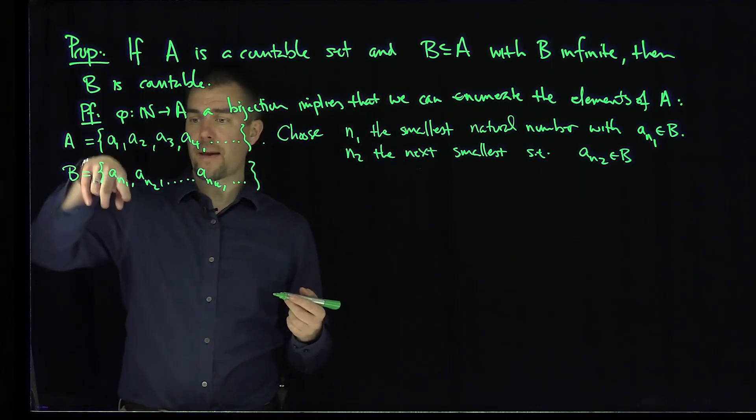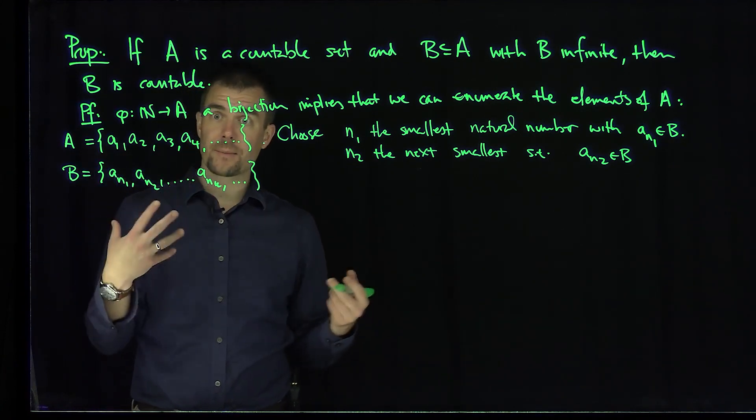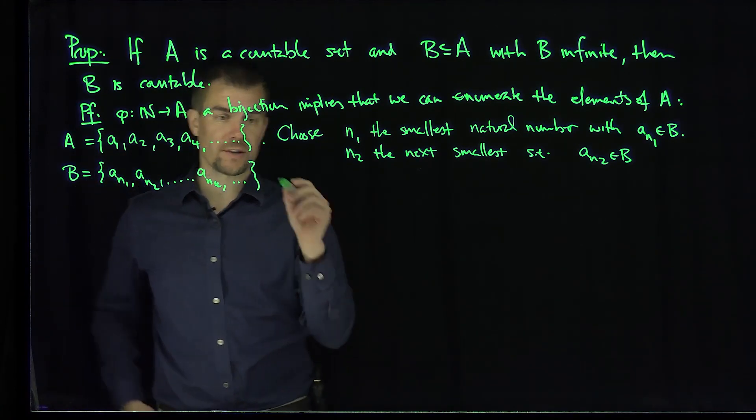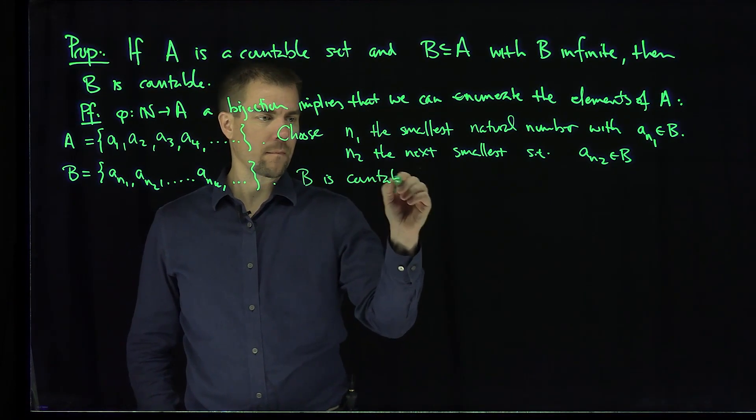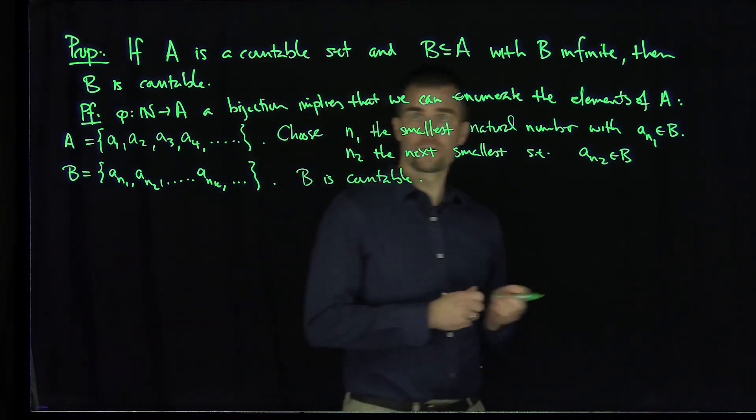And so I can find the function psi that maps to N1, N2, N3, because it's a subset of natural numbers, and so such a psi exists. And therefore B is countable. So B is countable. Okay, that's the first result we have.